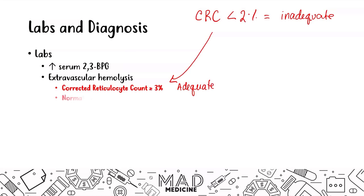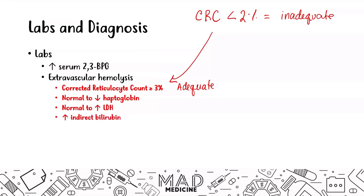You may see normal to decreased haptoglobin because you're not going to have free hemoglobin in circulation binding to haptoglobin. You might see normal to increased LDH — lactate dehydrogenase — and you're going to see an increase in indirect bilirubin. That increase in indirect bilirubin is very important.